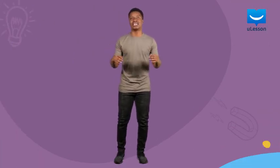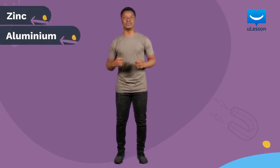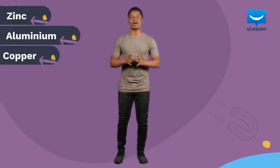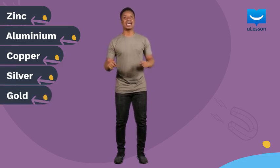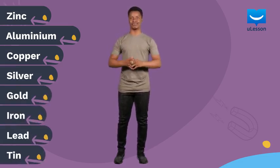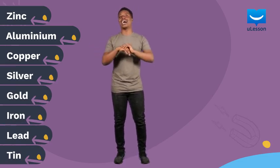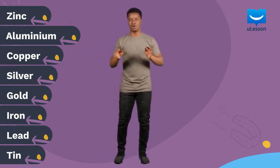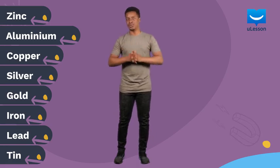Some examples of metals that can be found naturally in ores include zinc, aluminum, copper, silver, gold, iron, lead, and tin. Please note that there are a lot more metals out there. I have only mentioned a few.